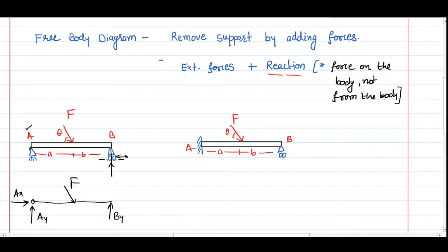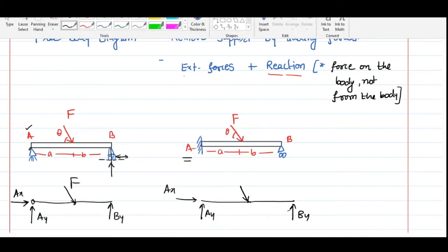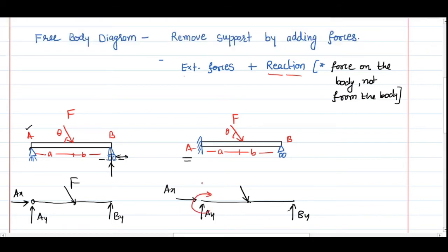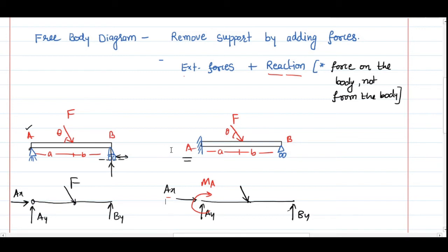For the fixed joint case, in addition to Ay and Ax, there is one moment M due to the fixed joint. These reactions are unknowns — we don't know the correct direction, so we assume a direction. When solving numerically, if the answer is positive the assumed direction is correct; if negative, the actual direction is opposite to the assumption.